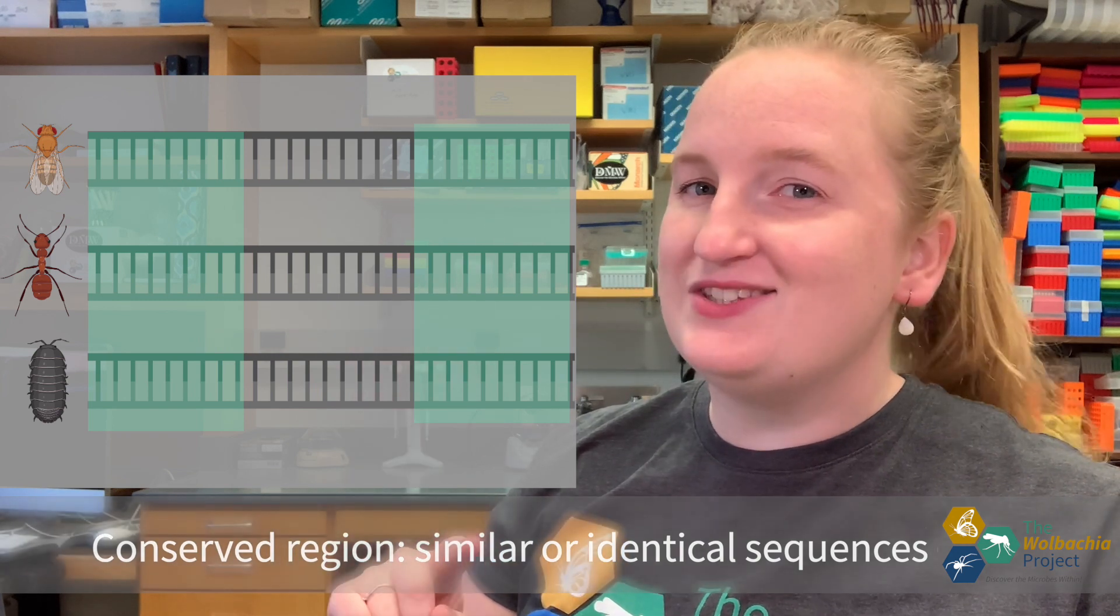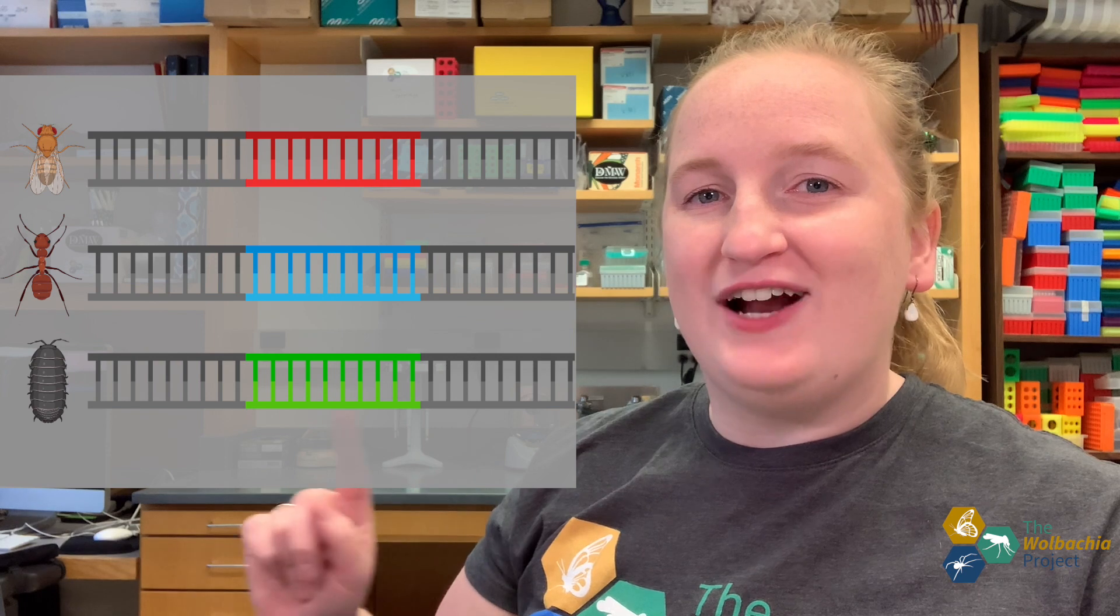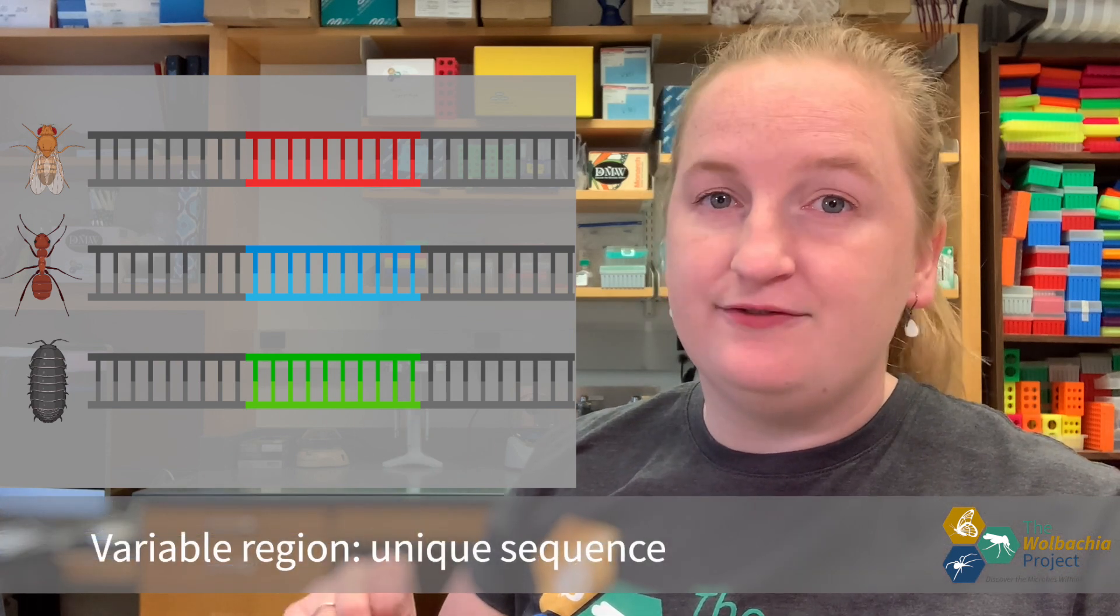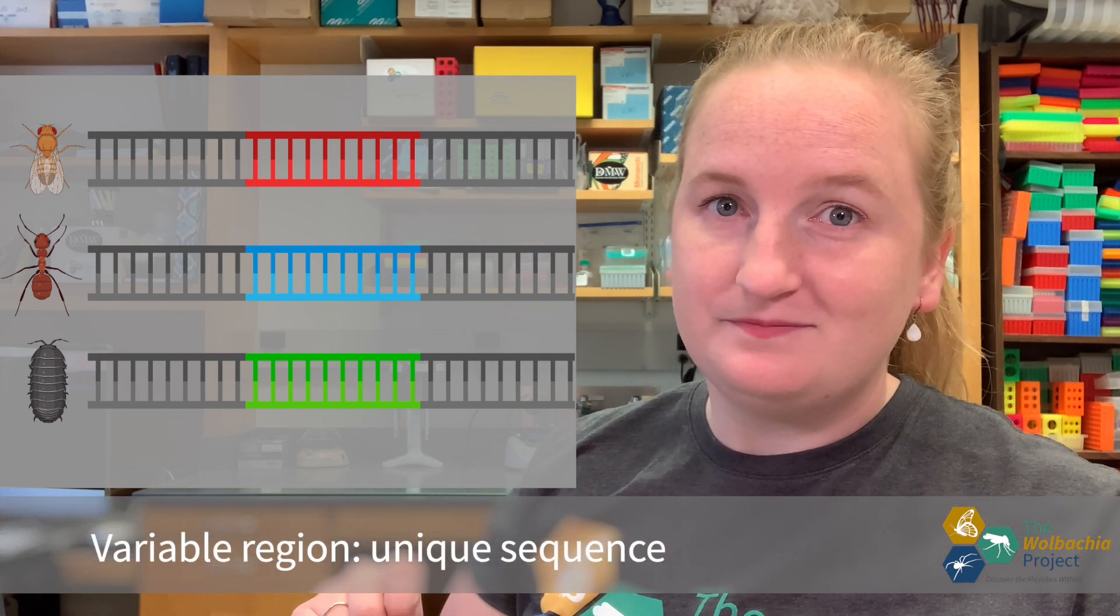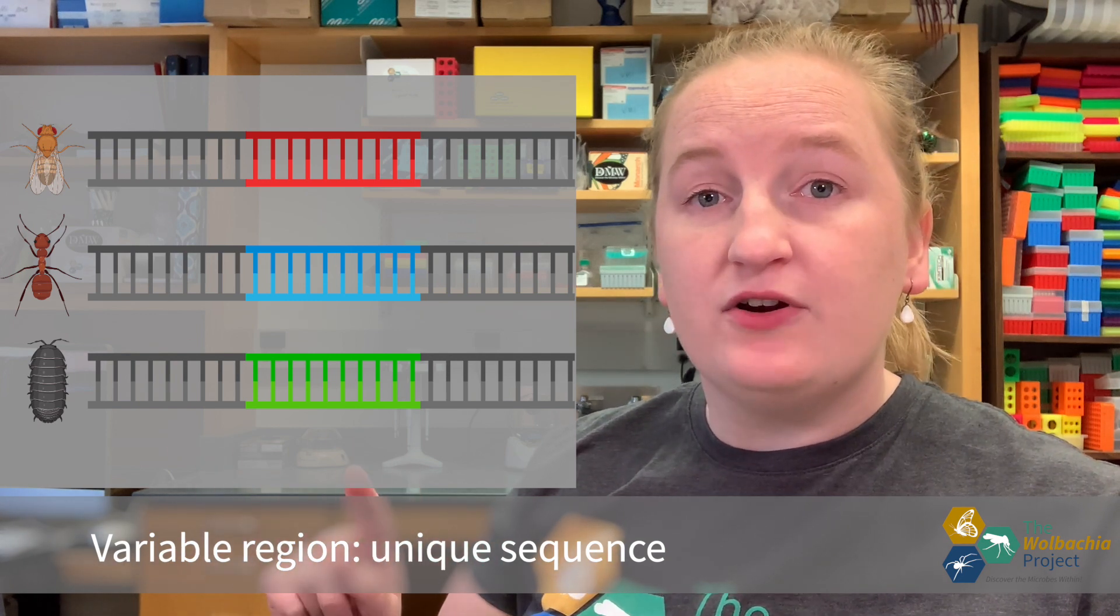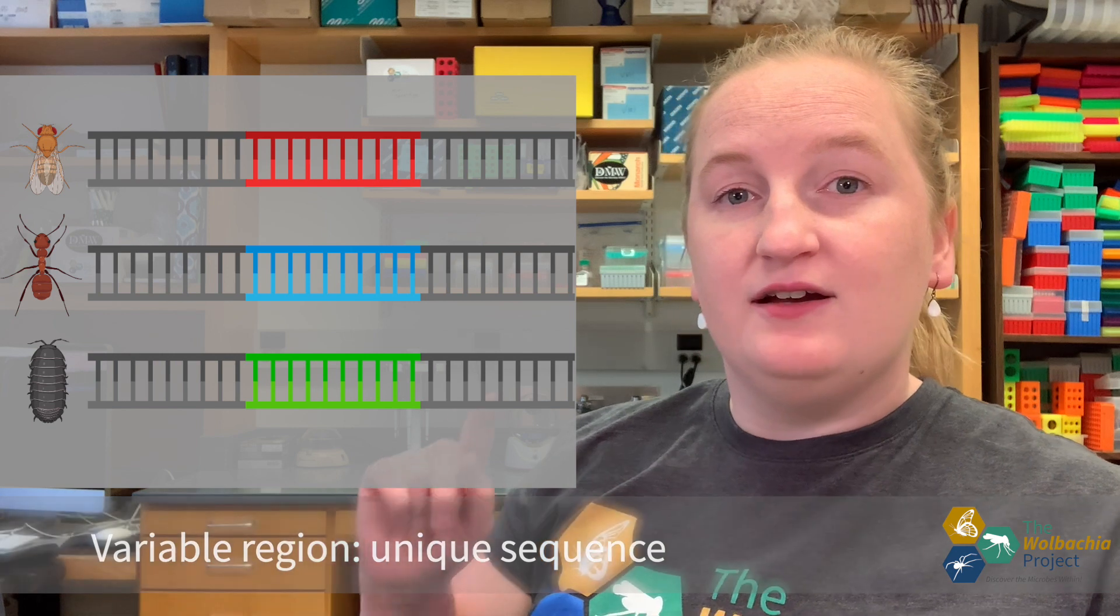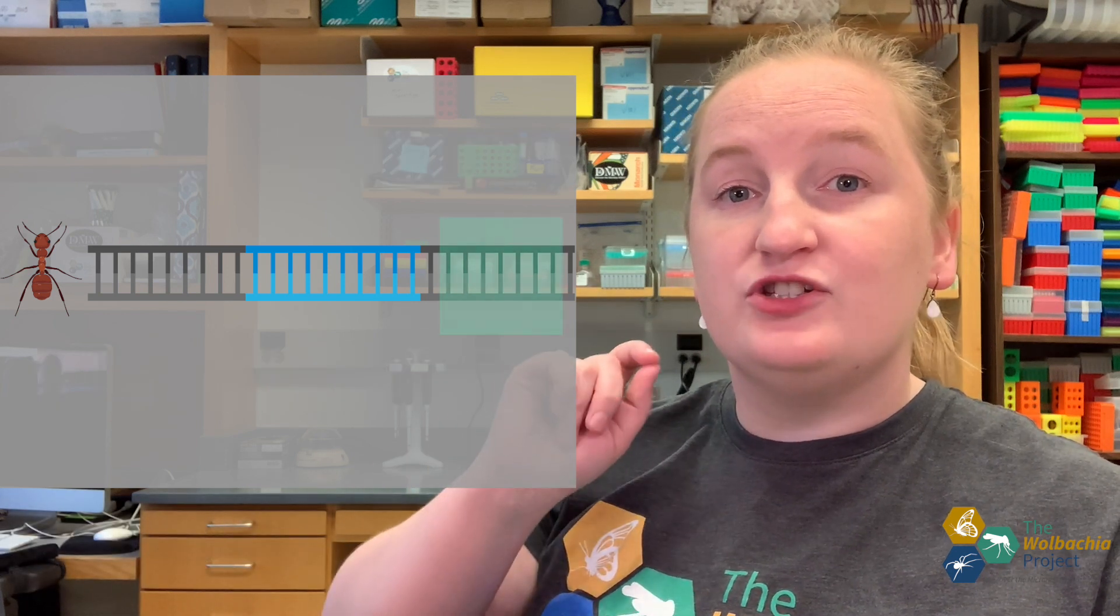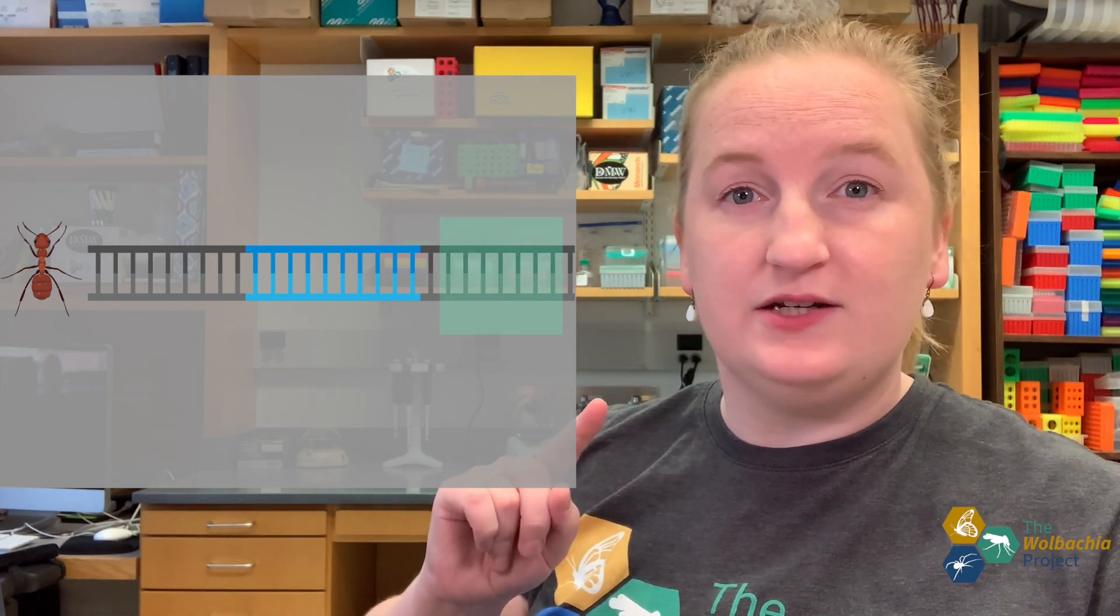However, this is the cool part. There's also a fragment of this gene that is different in every single arthropod. So we can barcode this part, the variable part, by looking and starting our search at the conserved region, because we know what that sequence is, and copying across that variable region until we get to what we know the sequence is again at the other side of the conserved region.